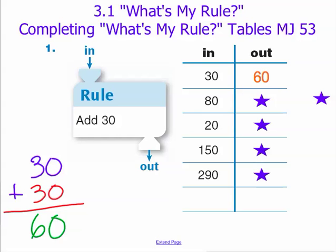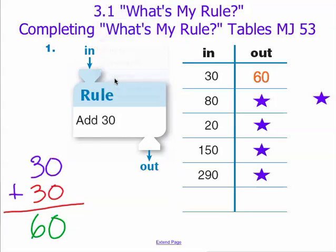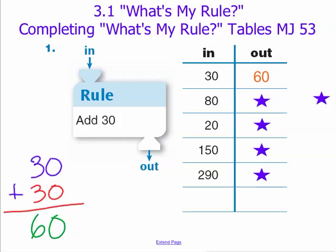Similarly, when we place 80 into our function machine as our input, we add 30 to that and our output should be 110. Moving a little faster now, if our input is 20, we apply the rule to it, we add 30, so our output is 50.